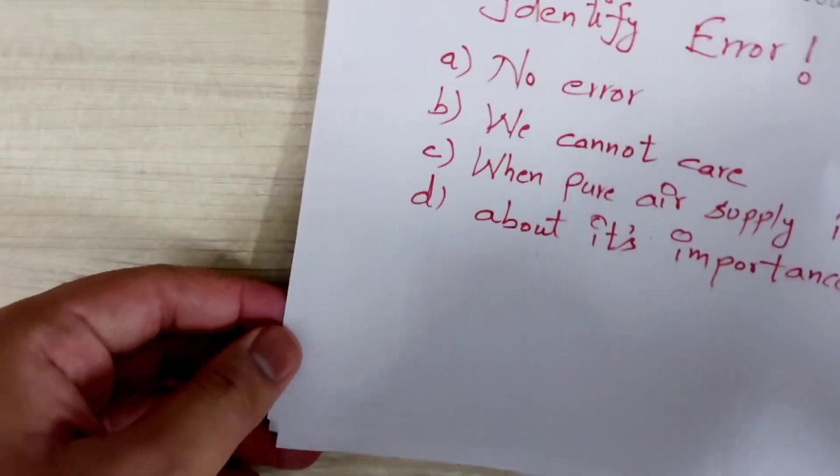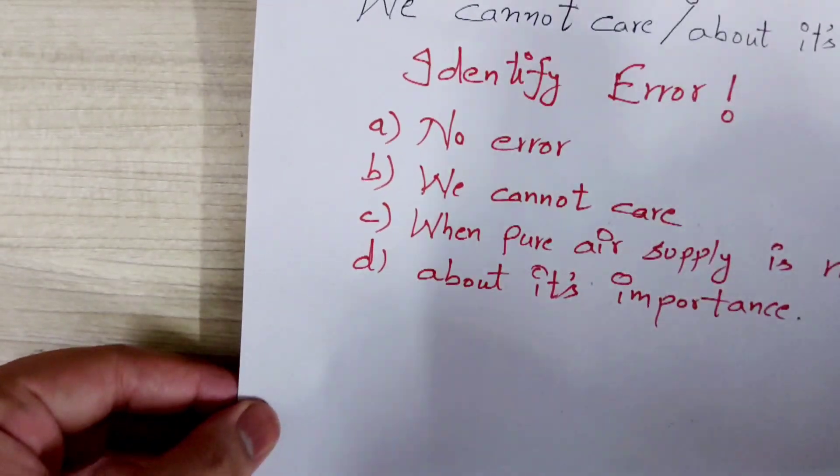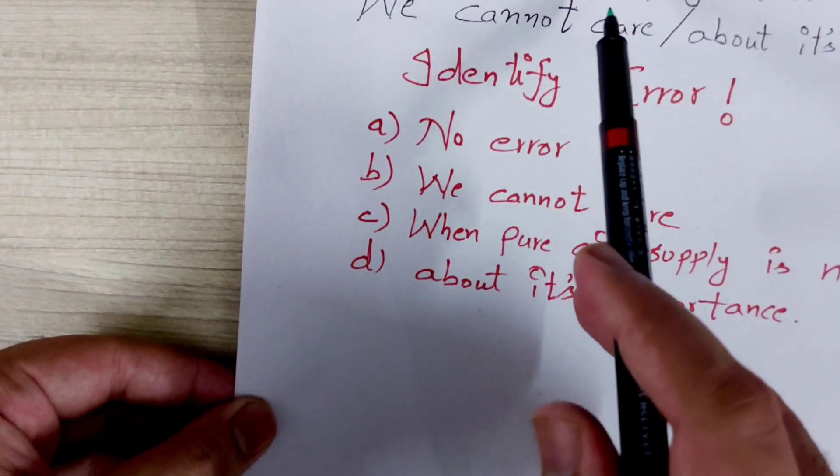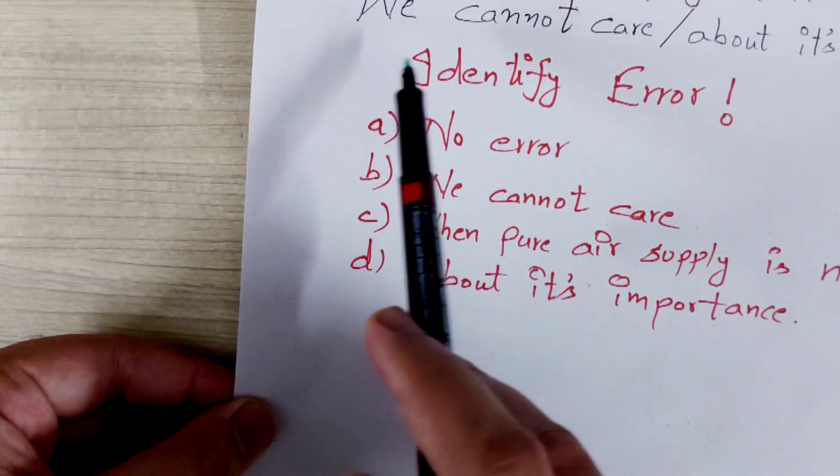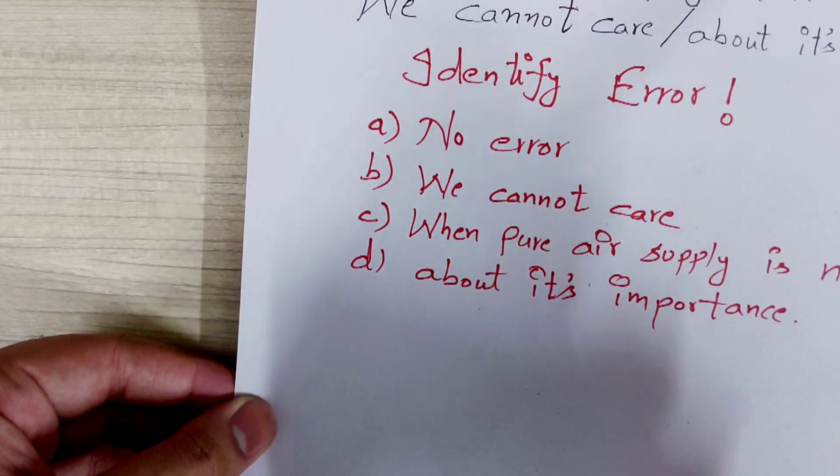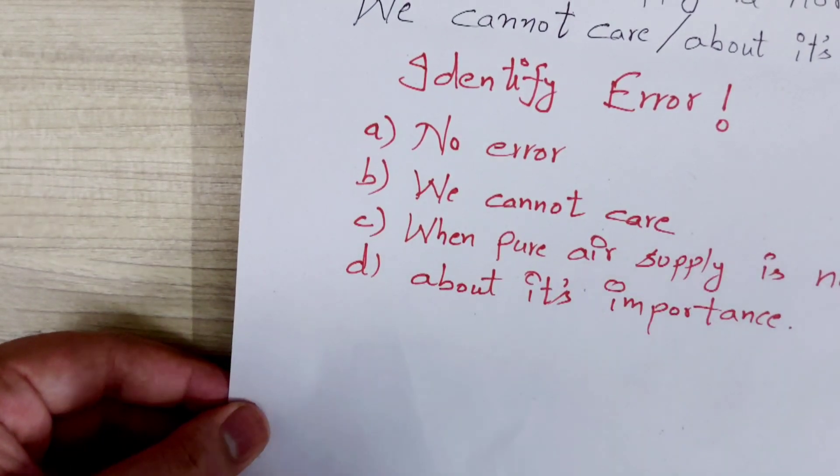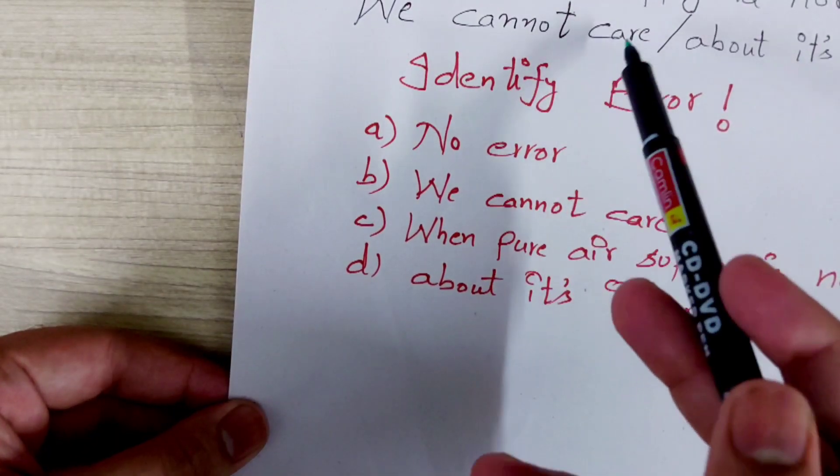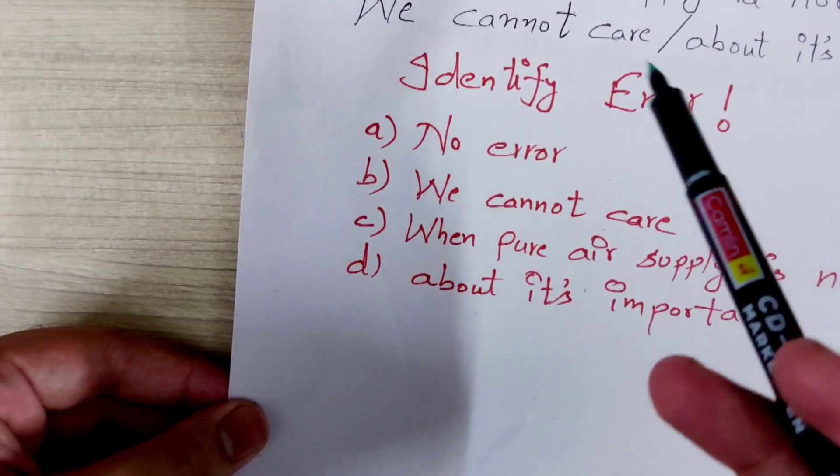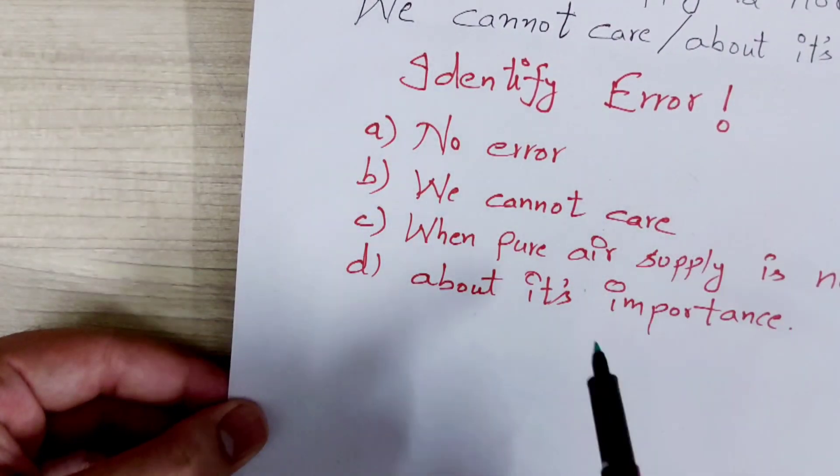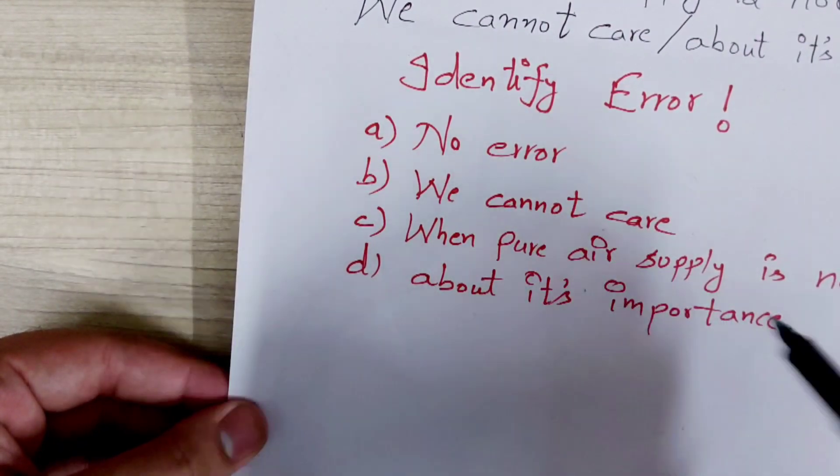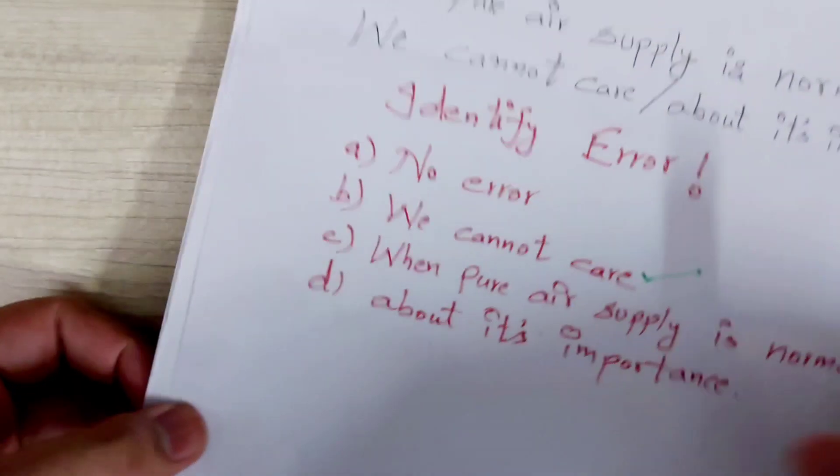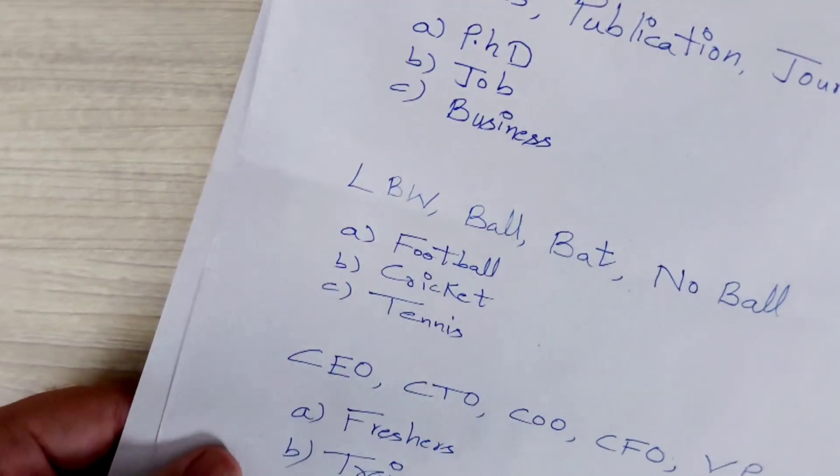Let's move to the next question. We have to identify an error here. When pure air supply is normal, we cannot care about its importance. Now tell me the answer. Very simple. Like when pure air supply is normal, we cannot care. This is the error. We can care, but we don't. Got it guys? So let me see the option. Yeah, this one is your error. And rest everything is okay.